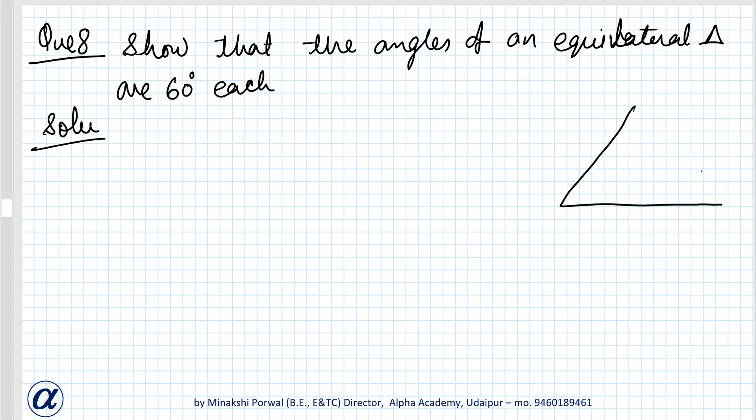Solution. There is a triangle given, it's an equilateral triangle. Given: triangle ABC is equilateral triangle.